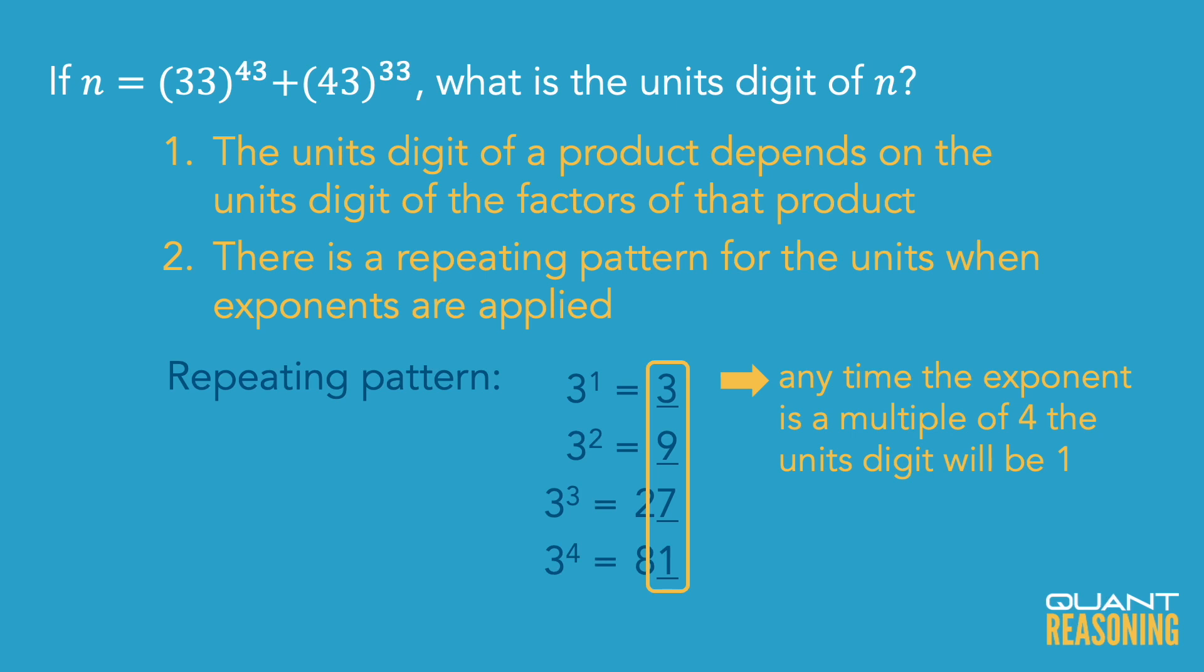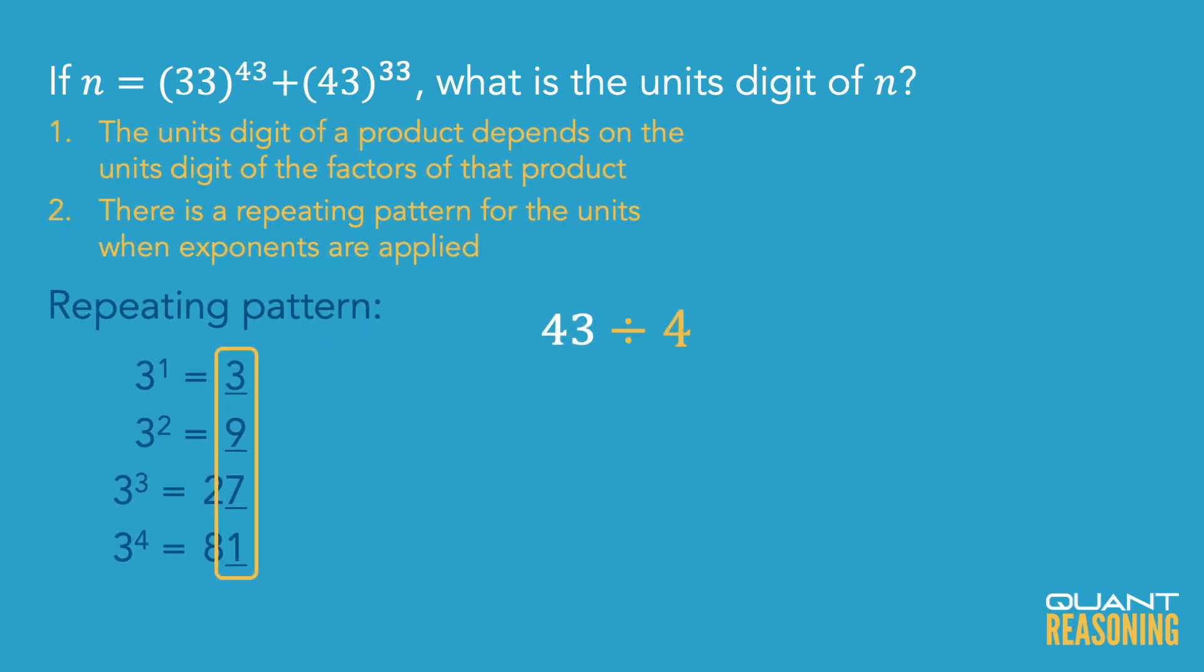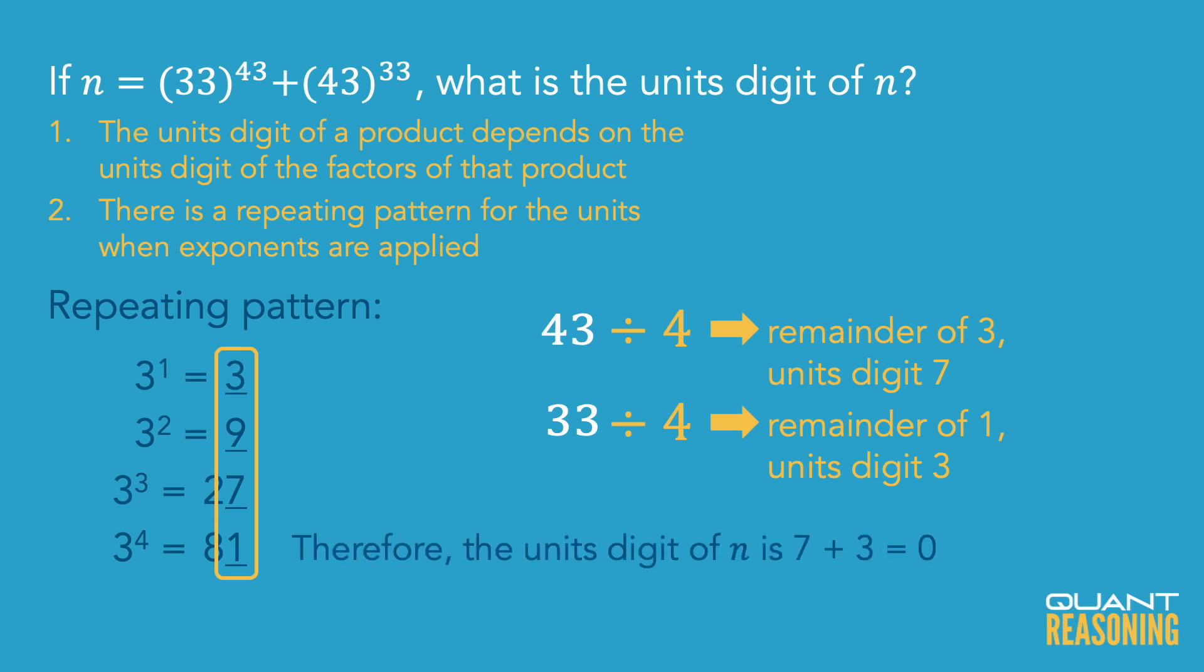Now looking at the exponents that we have here, 43 has a remainder of 3 in the context of divisibility by 4, and 33 has a remainder of 1 in the context of divisibility by 4. So looking at my pattern, the remainder of 3 points us to 7, and remainder 1 points us to 3. Adding them together, I get a units digit of 0. So I'm going to go ahead and pick answer choice A and move on to the next question.